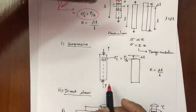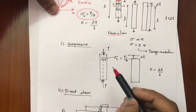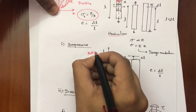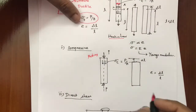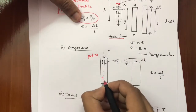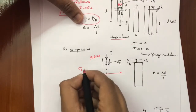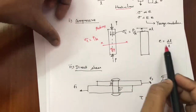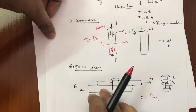Now, compressive stress is similar to tensile stress but opposite in direction. On the same element, we apply the load along the axis but it is kind of pushing — previously we pulled, here we push. Due to pushing, the material will be compressed and internally some stresses are generated. Compressive stress is also load divided by area, and strain is change in length divided by original length.